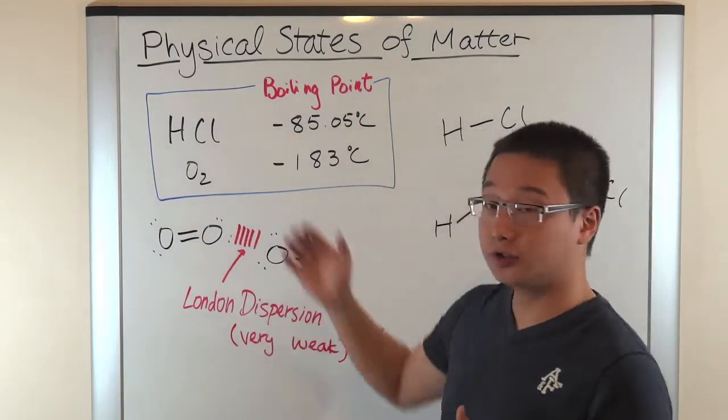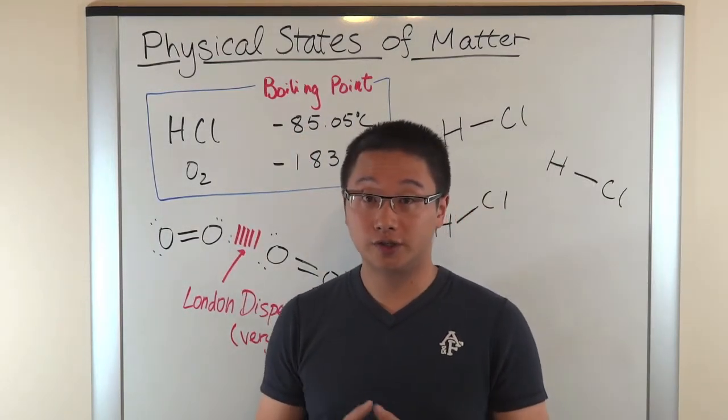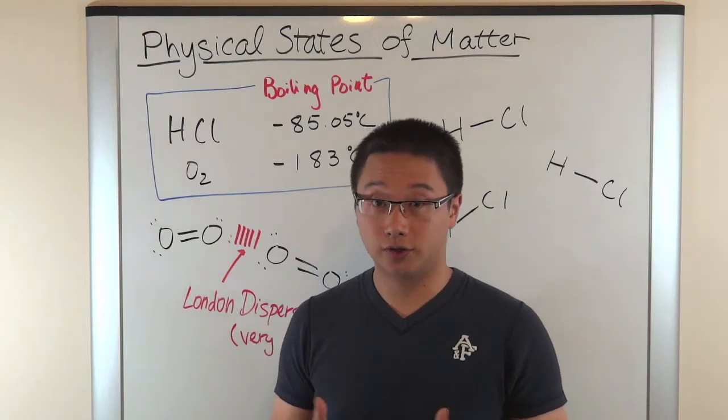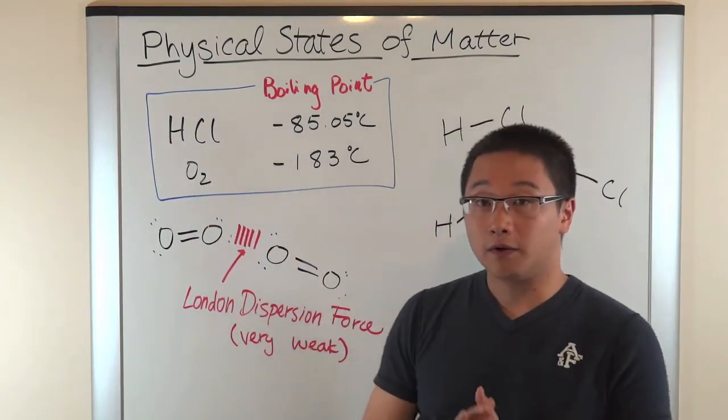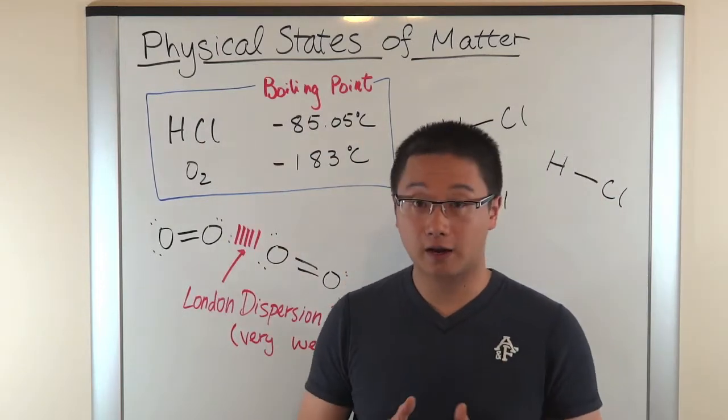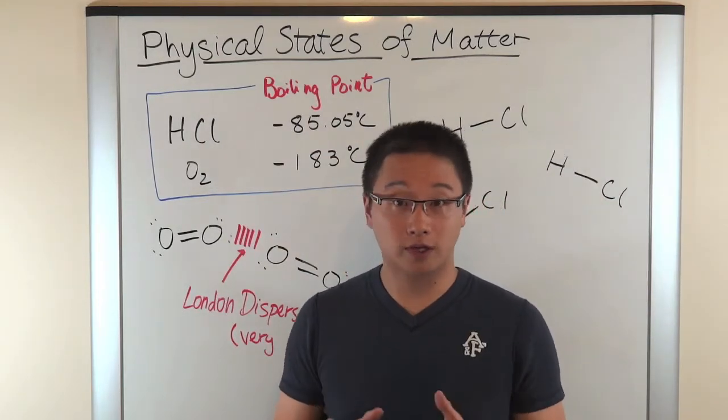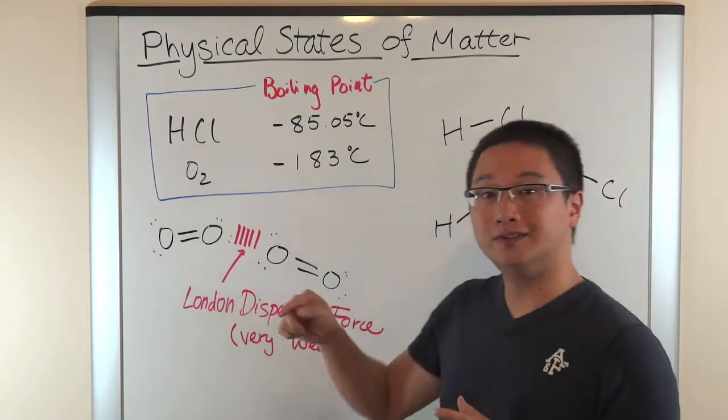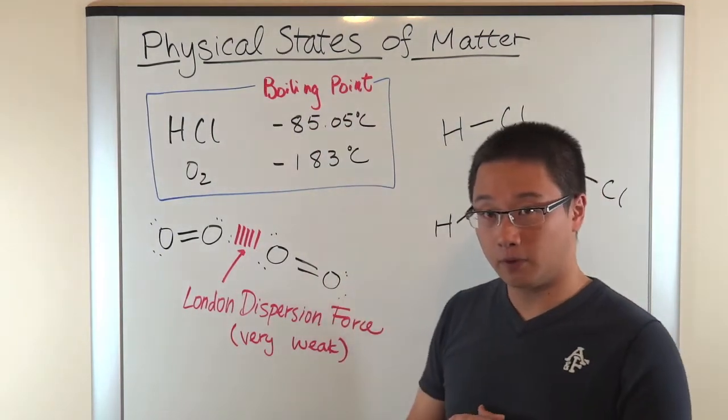And right here, what we are seeing is the boiling point of HCl, hydrogen chloride, and oxygen gas, O2. Now, if you look at the numbers, these two numbers right here, they're both negative, they're both very low temperature, but I want you to put focus on the difference between these two boiling points.